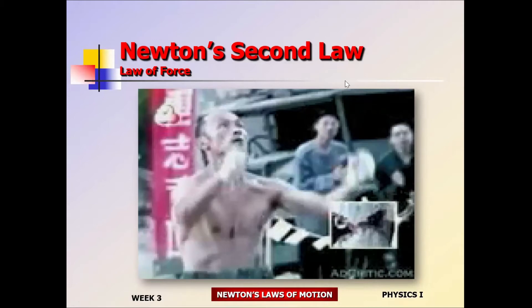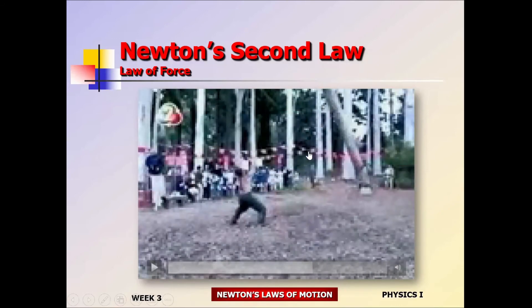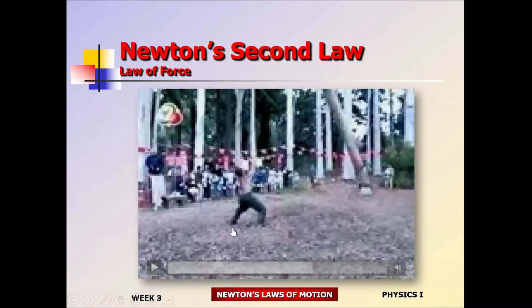So the martial artists — the Kung Fu masters — evidently, according to a lot of Eastern movies, they can defy the laws of physics. This guy is going to try to defy the second law. He's done his breathing exercises. He's going to try to catch this falling tree trunk without accelerating. According to physics, this guy should accelerate in the direction of the external force. There's going to be an external force acting on him, and he should accelerate in that direction.